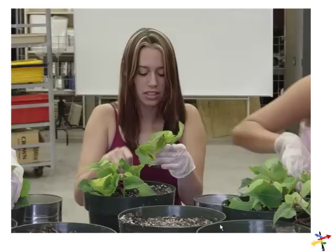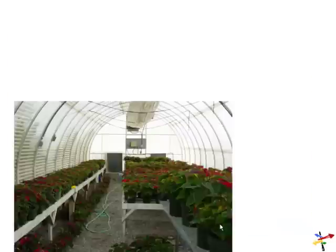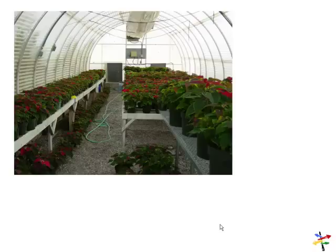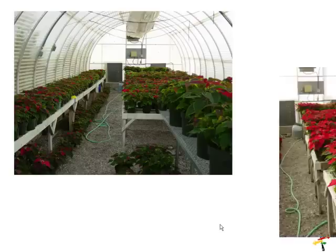For example, this is a poinsettia operation. They plant poinsettias in August, grow them for the holiday season, harvest in November, and then market them in November and December. That would be an agribusiness operation — just one part, the plant side. They're growers, and they either market it themselves or through another company.